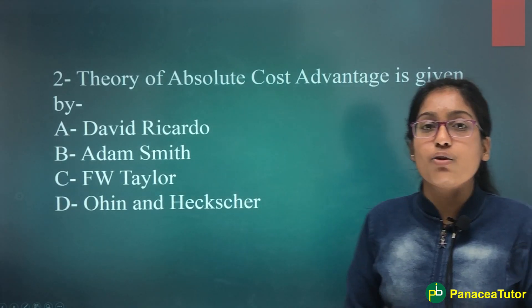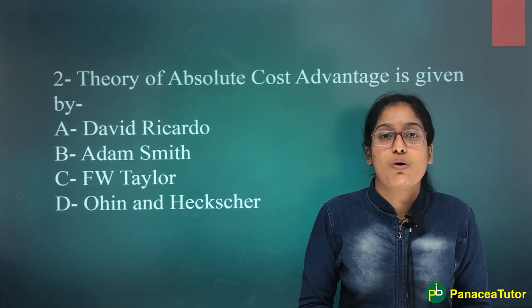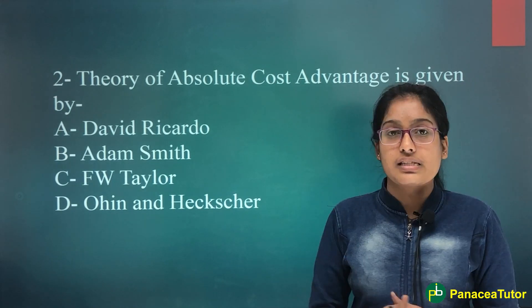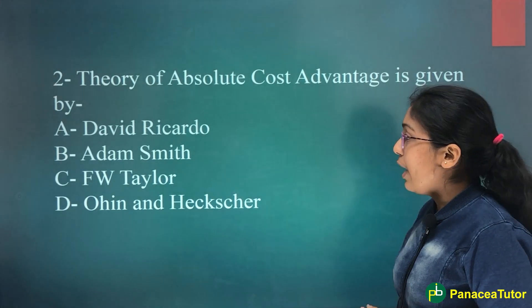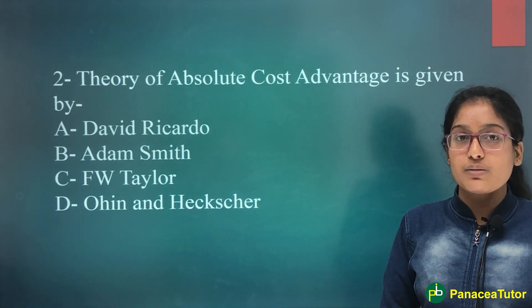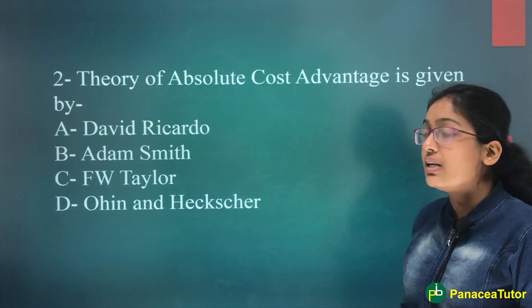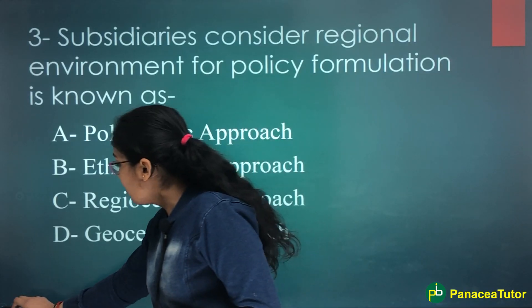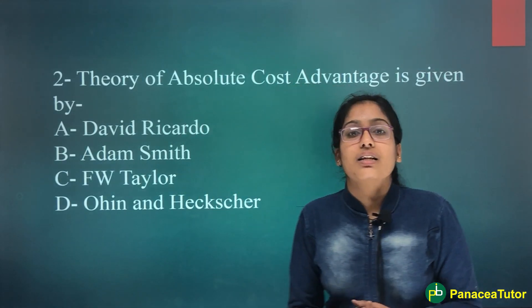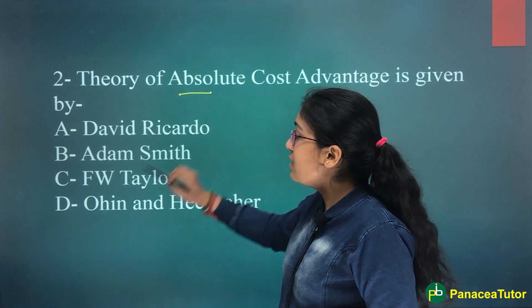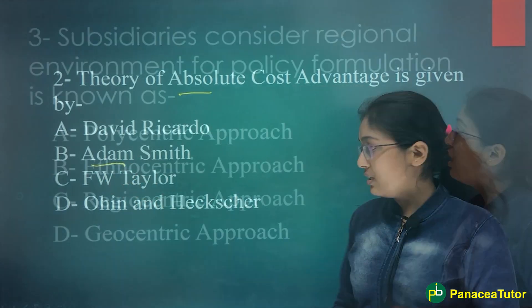Next: Theory of Absolute Cost Advantage was given by — Option A: David Ricardo, Option B: Adam Smith, Option C: F.W. Taylor, Option D: Ohlin and Heckscher. The right answer is Adam Smith. To remember this, there is a simple trick: A for Absolute, A for Adam Smith.